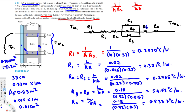Since R3, R4, and R5 are in parallel, we use the parallel resistance formula: 1/R_345 = 1/R3 + 1/R4 + 1/R5. This gives 1/R_345 = 1/54.55 + 1/0.8333 + 1/54.55. Solving, R_345 = 0.8086 °C/W.